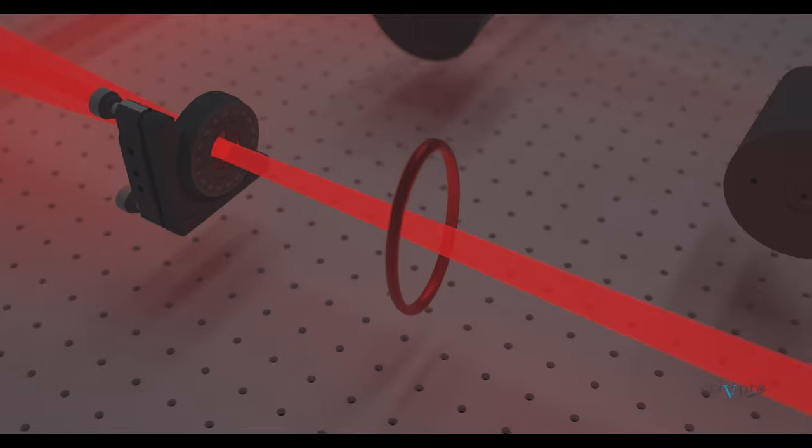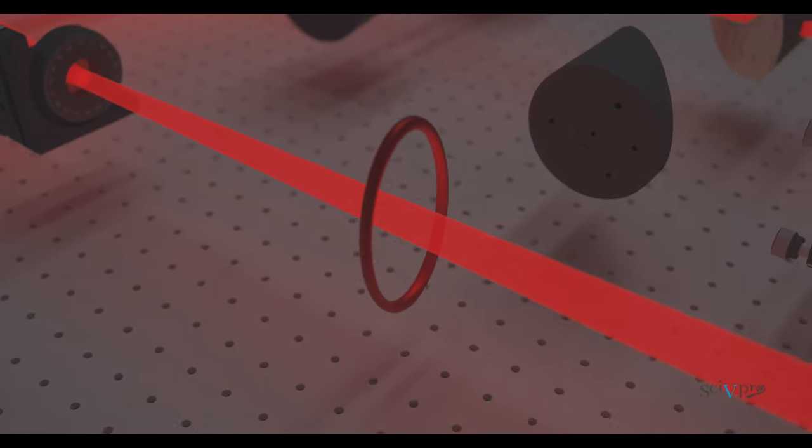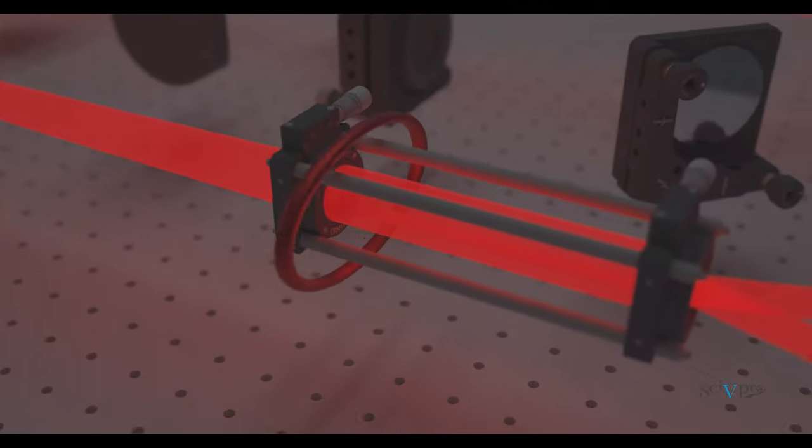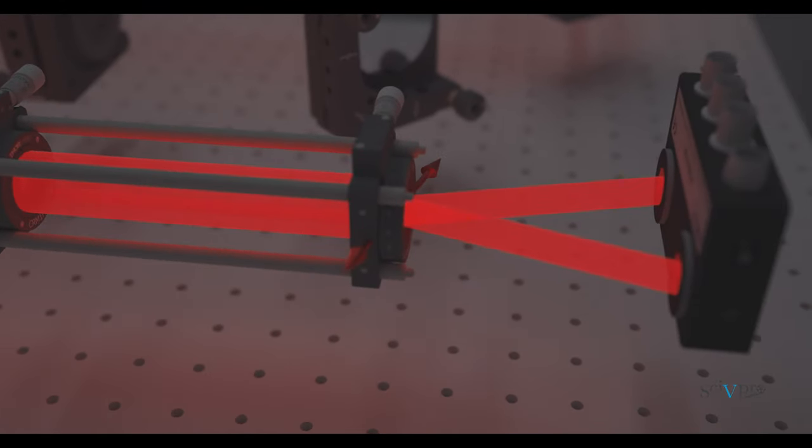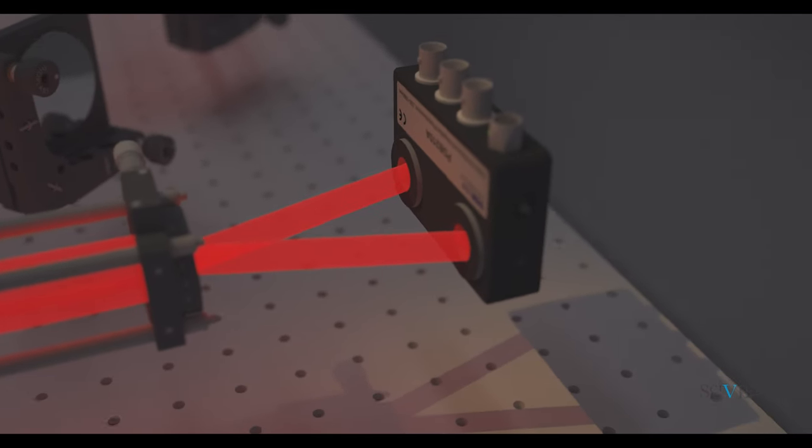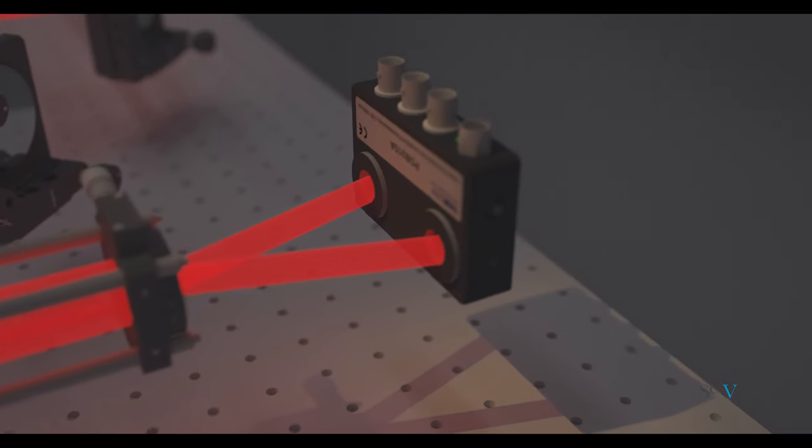The technique is called electro-optic sampling, where an electro-optic crystal is hit by the output terahertz signal as the pump and a weak optical pulse as the probe. By measuring the change in the probe pulse transmitting through the crystal, we can construct the output terahertz signal in the time domain.